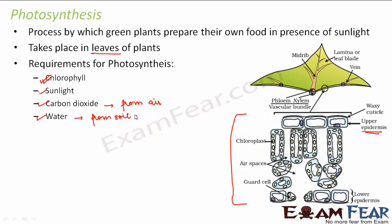So what does the chlorophyll pigment do? Chlorophyll actually absorbs the solar energy, and this solar energy is then converted into food. So solar energy is basically synthesized to get the food. These are the requirements for photosynthesis.